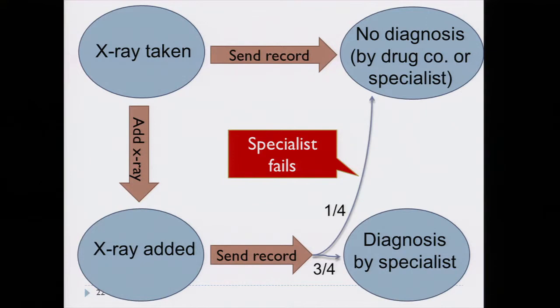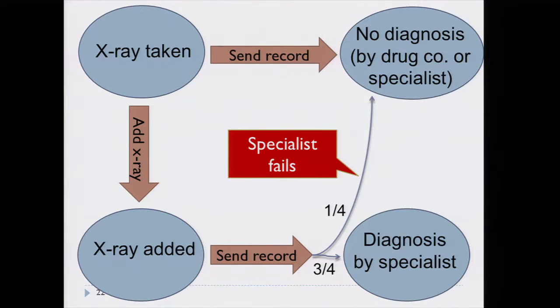But this idea doesn't quite work. Here's a simple counterexample: the record was sent to a specialist for diagnosis, but there's a small chance the specialist might fail and not arrive at a diagnosis. In this case you do not achieve diagnosis — does this mean these actions are not for diagnosis? That seems counterintuitive because clearly the intention was to achieve diagnosis. The difference is that in the previous definition I was equating achieving the purpose with an action being for a purpose, whereas here we want to say that an action is for a purpose if it was intended to achieve that purpose.